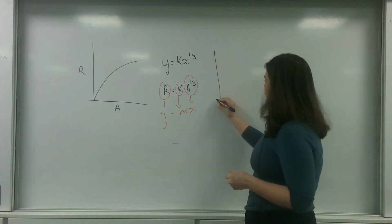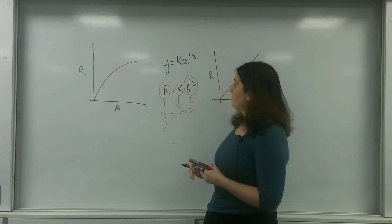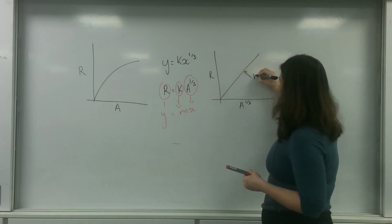So the graph they are looking at is this here, A to the third and r. And of course this gradient here is the constant.